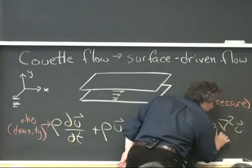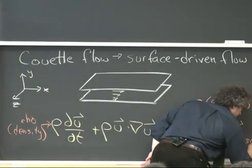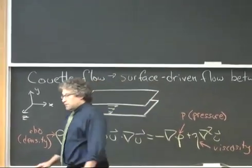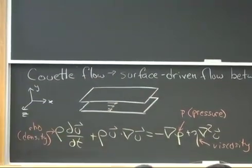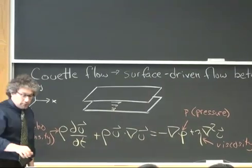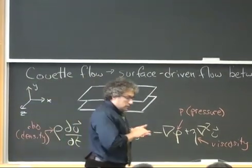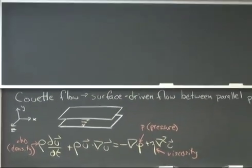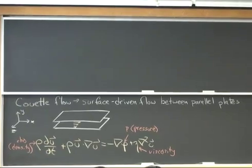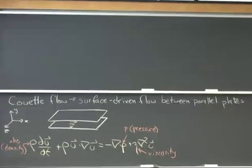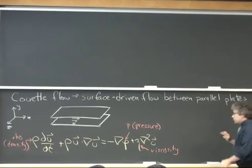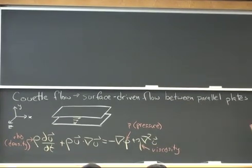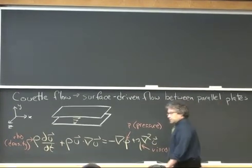We'll use eta to denote the viscosity. In most mechanical engineering contexts, people use mu to denote the viscosity, and there's nothing wrong with that. However, in electro-kinetic transport, we have lots of different parameters known as mobilities, and these mobilities are typically described in terms of the Greek letter mu. So I want to reserve mu for these mobilities, and I'll use this eta for viscosity. This eta notation happens to be more common in chemical engineering.